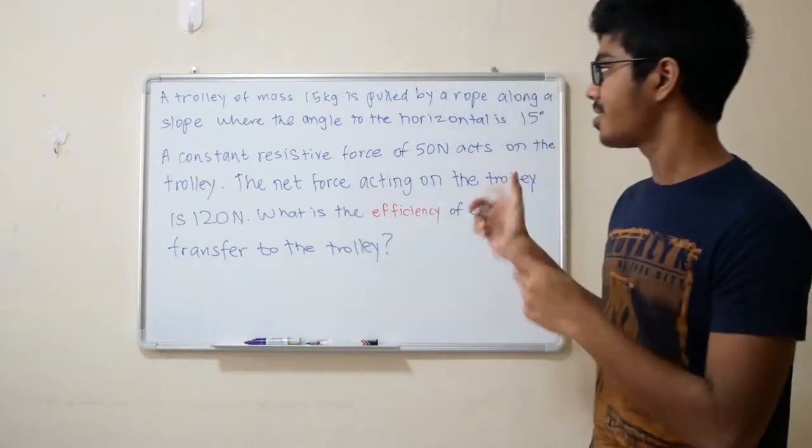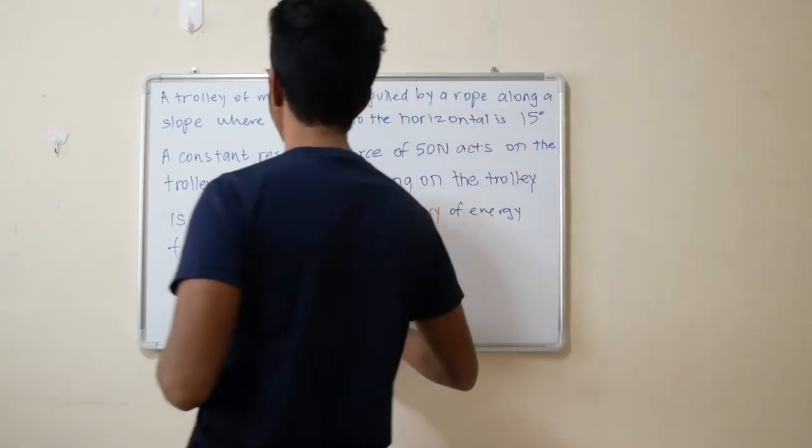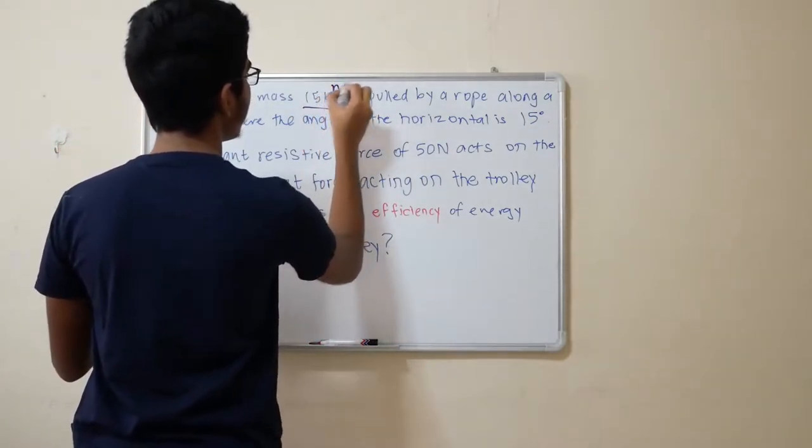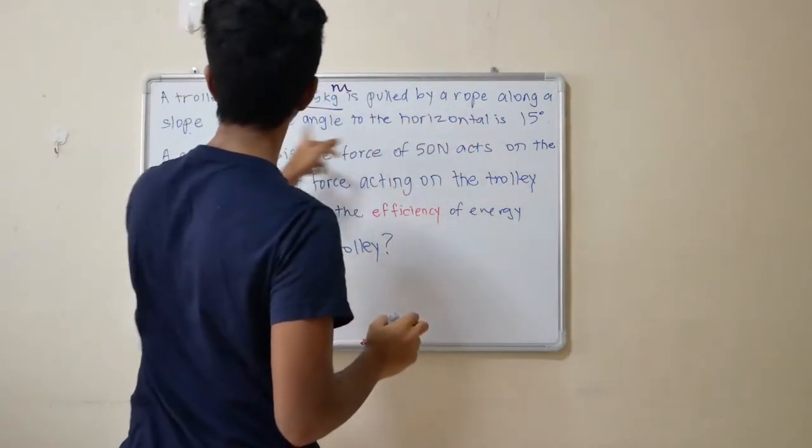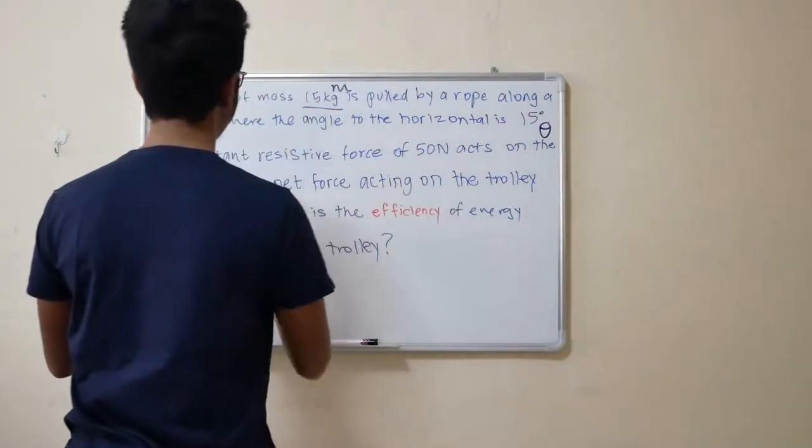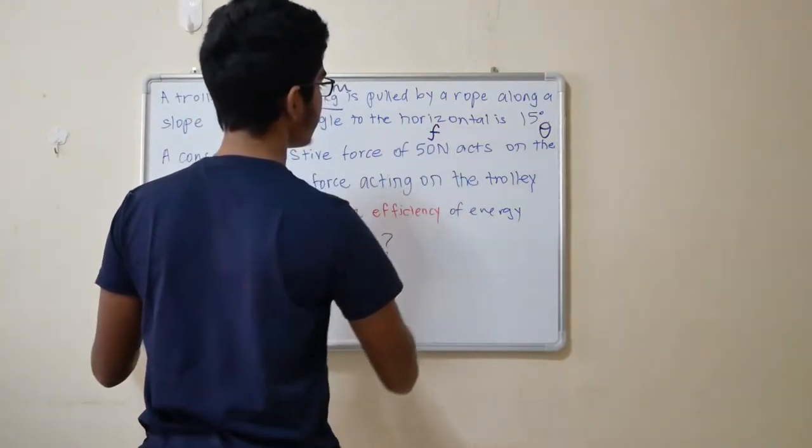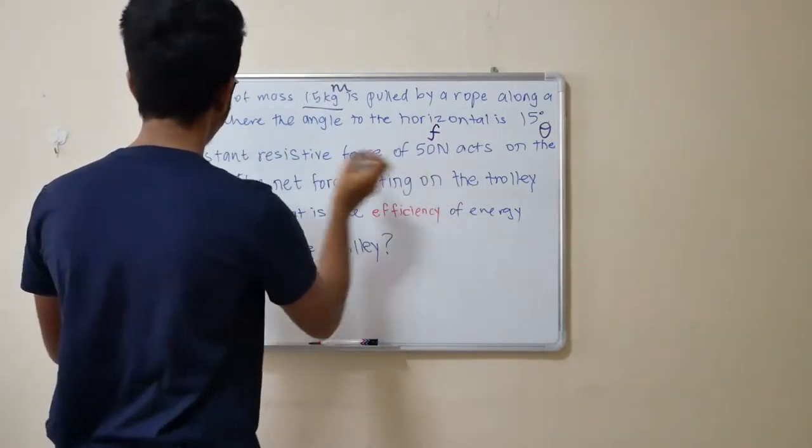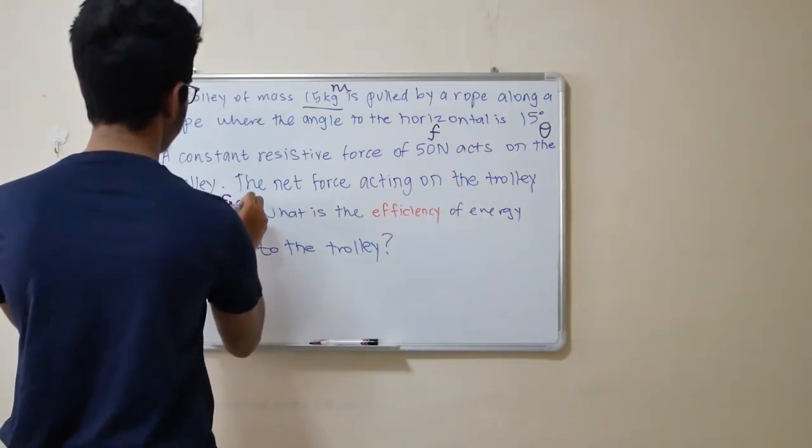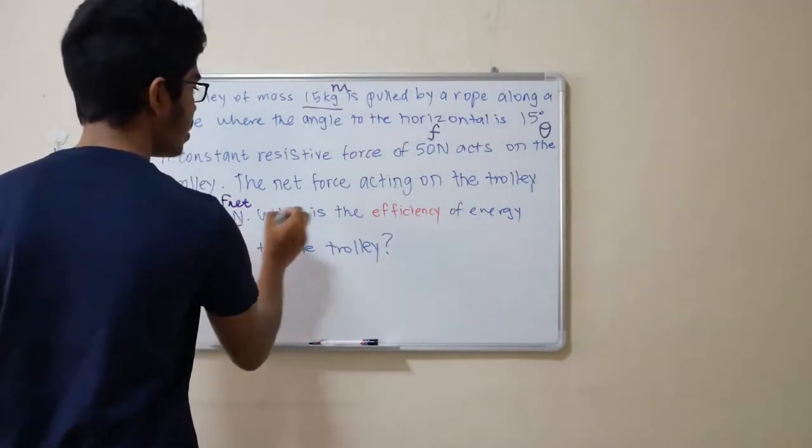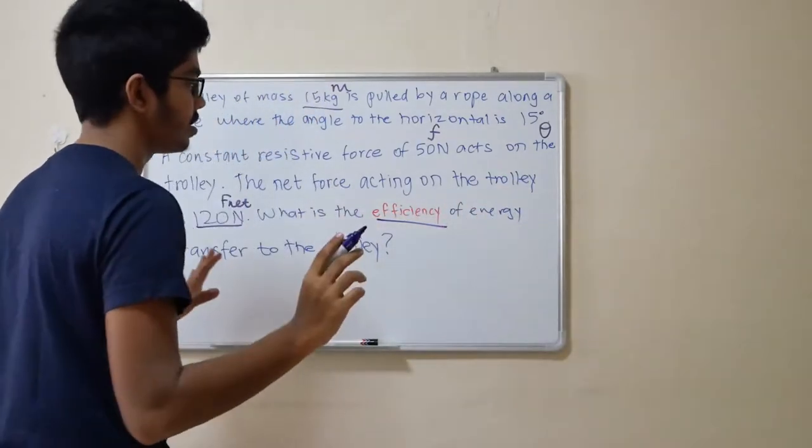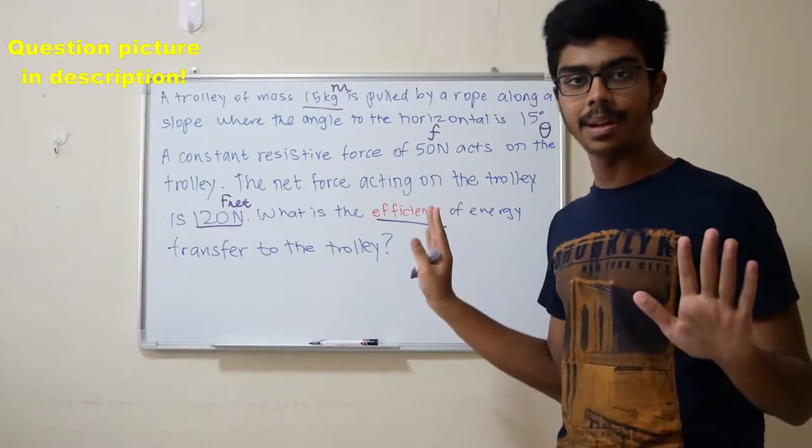So let's analyze the question that's right behind me. A trolley of mass 15 kg, so label as you go. This is M. It's pulled by a rope along the slope. Angle, we label it as theta. Constant resistive force of 50 N. We'll label it as with a small letter F. The net force acting on it is 120 N. We'll call it F net. What is the efficiency? Efficiency of energy transfer. This is an accelerating system, am I right?